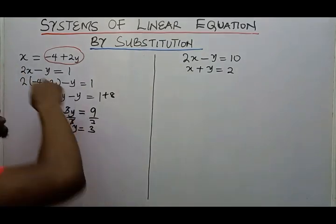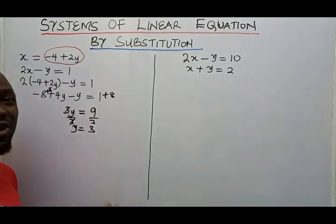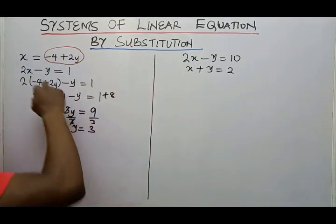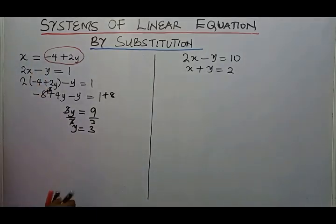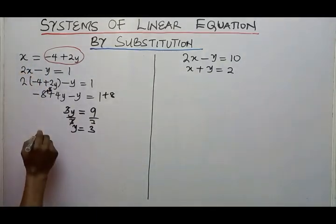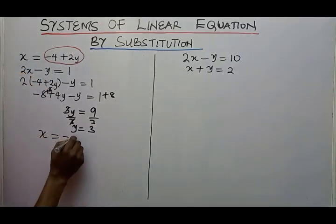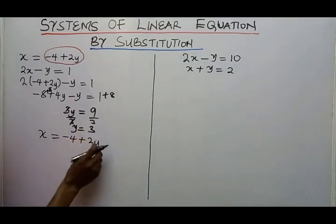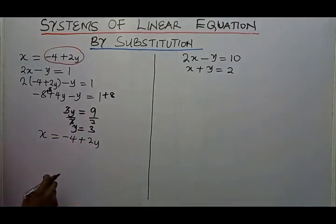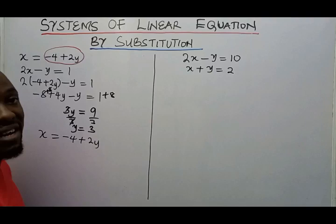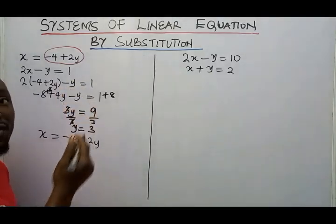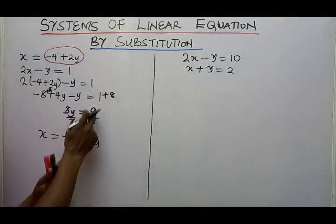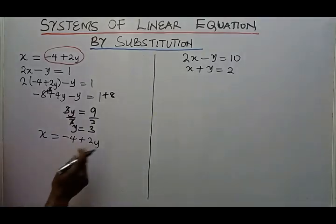In the first equation, X is already expressed in terms of Y, so it's easier to just copy that down: X equals minus 4 plus 2Y. I can then plug in the value of Y. You can actually plug Y into any equation, but since we're looking for X it's easier to use this one.